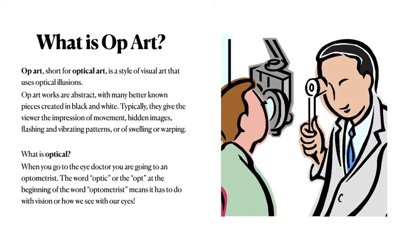But then we look at the word Op Art, and you might say, well, where does the 'Op' come from? That's Optical. So what is Optical? When you go to the eye doctor, you are going to an Optometrist. The word 'optic' — that 'opt' at the beginning of Optometrist — means that it has to do with vision, or how we see with our eyes.